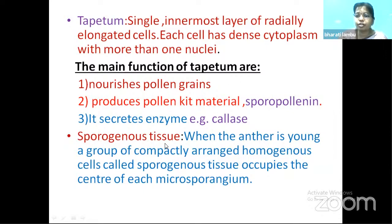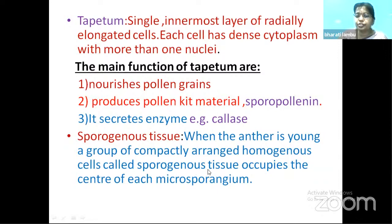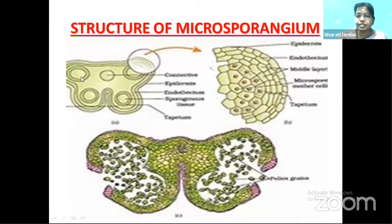Inside the tapetum there is a mass of homogeneous tissue called sporogenous tissue, which fills the microsporangium. When the anther is very young, it contains compactly arranged homogeneous cells with little space between them. These homogeneous cells further form the microspore mother cell. From sporogenous tissue only, the microspore mother cell is formed. This sporogenous tissue is a diploid structure. As the anther matures, this microsporogenous tissue forms the microspore mother cell.